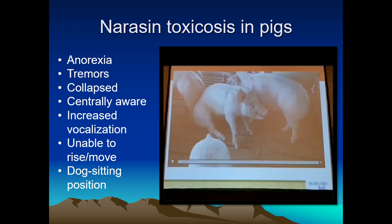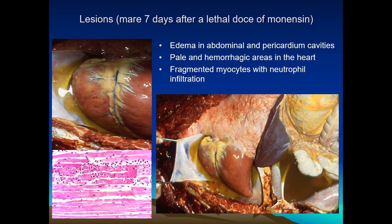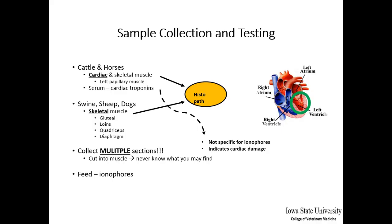The pig case video is very dramatic — there is increased vocalization because the pigs are in pain, they are unable to rise and move, and they adopt a dog-sitting position. These pigs also had anorexia, tremors, and collapse, but were all centrally aware with no CNS involvement. Images of a mare that died seven days after acute exposure to monensin show edema in the abdominal cavity and pericardium, pale areas on the heart surface, and hemorrhagic spots.